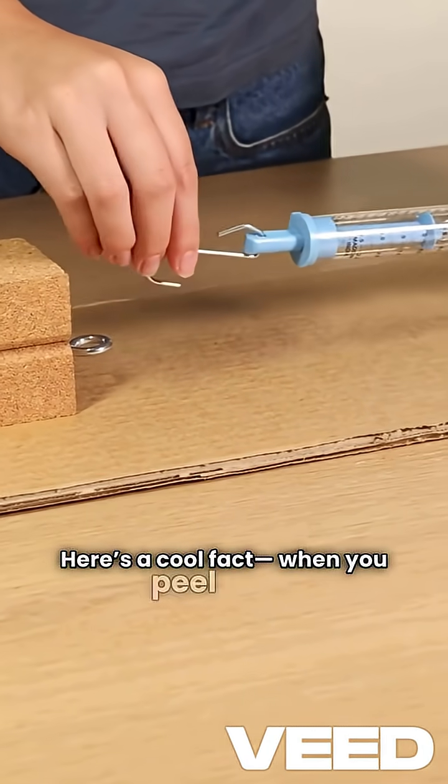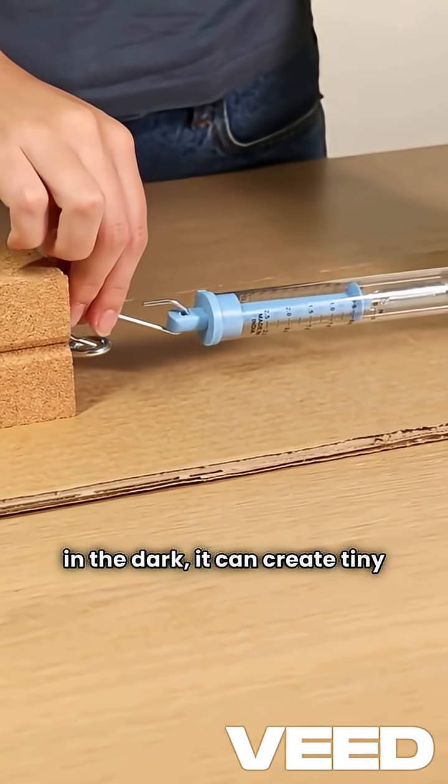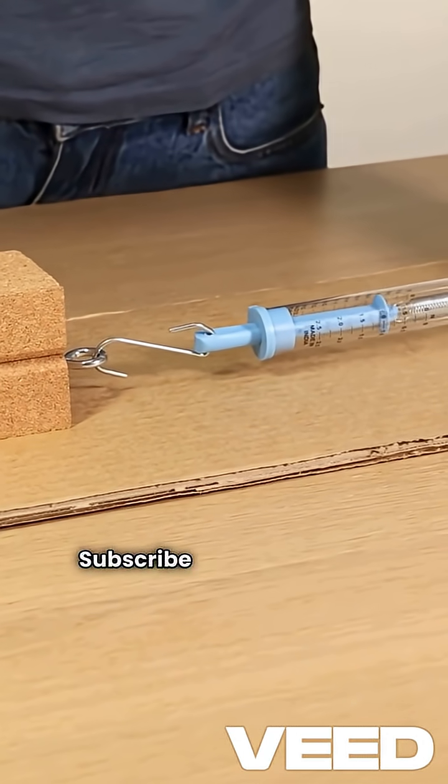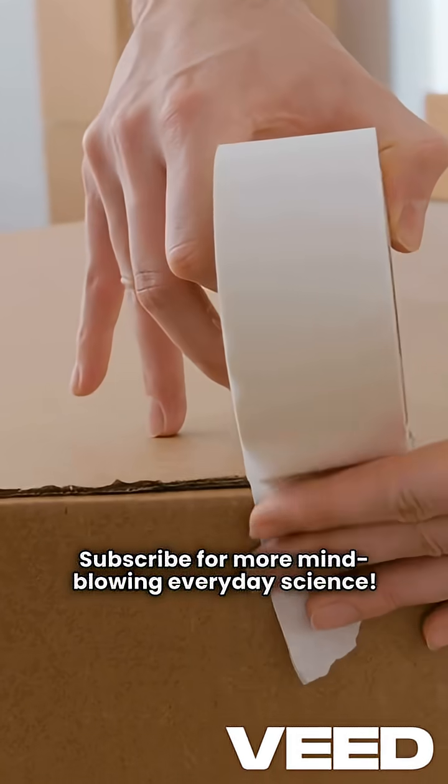Here's a cool fact. When you peel tape in the dark, it can create tiny sparks of light from friction, called triboluminescence. Subscribe for more mind-blowing everyday science.